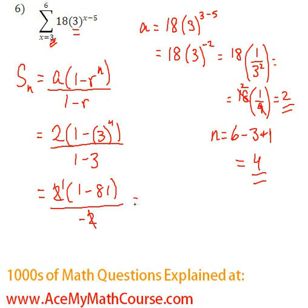2 over 2, just 1. But we still have the negative 1 down at the bottom in the denominator. So 1 minus 81, negative 80, divided by negative 1, which is just positive 80, which is the sum of this series. That's it. Thank you.